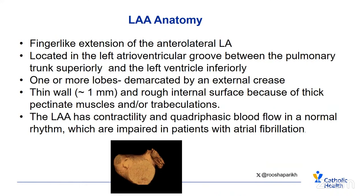Left atrial appendage anatomy: it's a finger-like extension of the anterior lateral left atrium, located in the left AV groove between the pulmonary trunk superiorly and the left ventricle inferiorly. One or more lobes can be demarcated by an external crease. It's typically a thin-walled structure, about one millimeter, with a rough internal surface due to thick pectinate muscles and trabeculations. The LAA also has contractility and quadraphasic blood flow in normal rhythm, which is impaired in patients with atrial fibrillation.